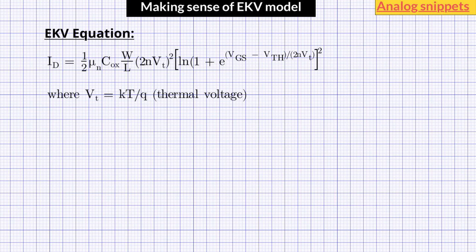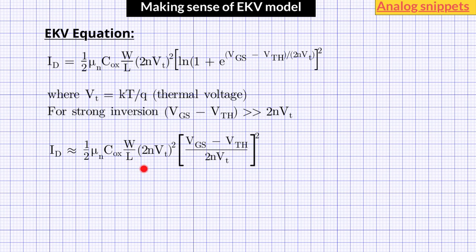Now let's consider how this equation converges into the strong inversion square-law equation. In strong inversion, VGS minus VTH should be much larger than 2nVT. Typically, VGS minus VTH should be higher than 100 millivolts or so. When this condition is true, the term within the square bracket reduces to just (VGS - VTH)/(2nVT). The 2nVT squared term cancels out, and we are left with the familiar square-law relation.